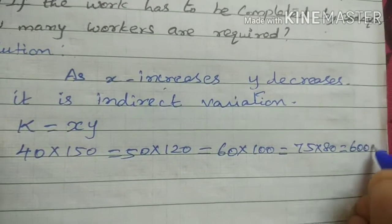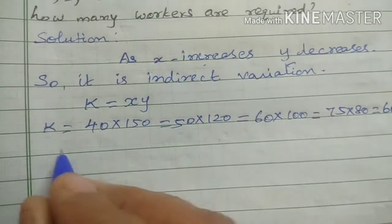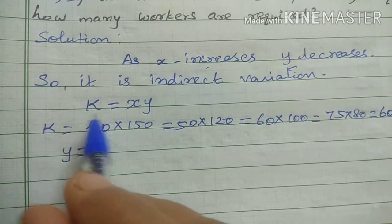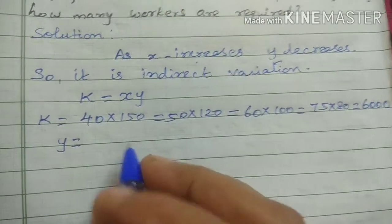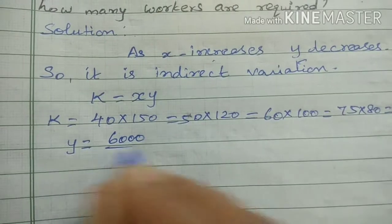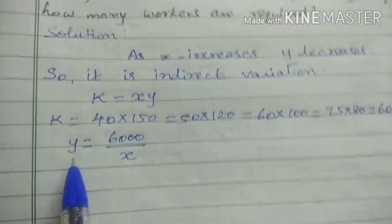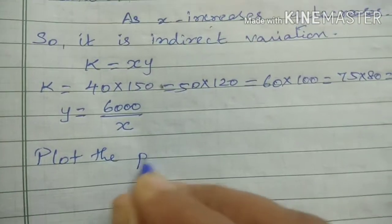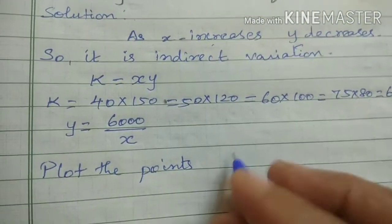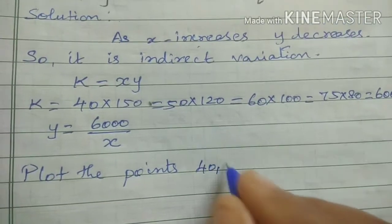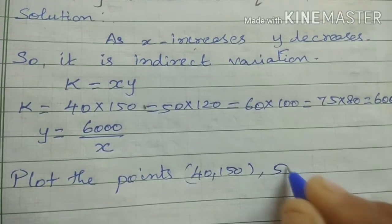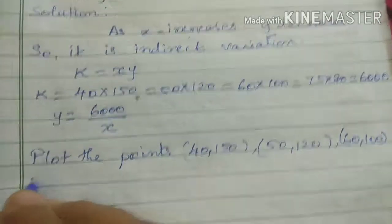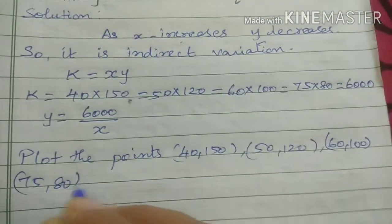All products equal 6000. So k = 6000. The equation is y = k/x, which gives y = 6000/x. This is our equation. The data table has x values: 40, 50, 60, 75 and y values: 150, 120, 100, 80.